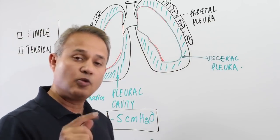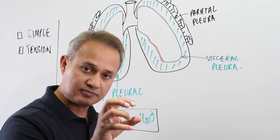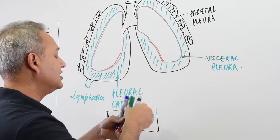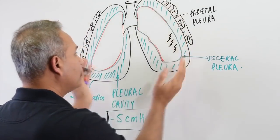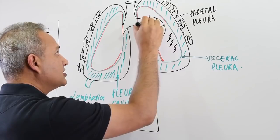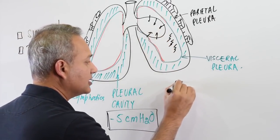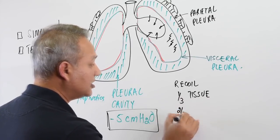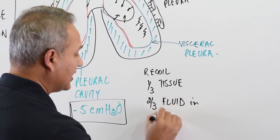Now imagine: if this suction effect — this outward pull — is taken away, then the lungs have a tendency to collapse. What contributes to that tendency? There is the fluid-air interface problem, or surface tension generated by that, and secondly there is the surface tension generated by elastin and collagen fibers trying to recoil. These are the recoil forces: one third is from tissue elastin and collagen fibers, and two thirds are from the fluid present in the alveoli.